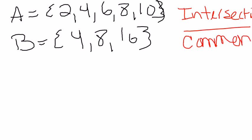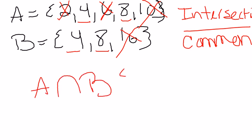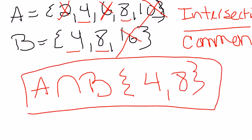in common. So let's look. I can see that A has a 2 but B does not. So I'm not going to look at that. They both have a 4. 6 exists in set A but not in set B. 8 is in both. 16 does not exist in set A and 10 does not exist in set B. So A intersection B would only include 4 and 8. Again we only listed what was in common.